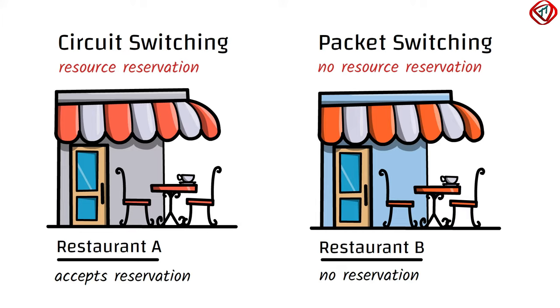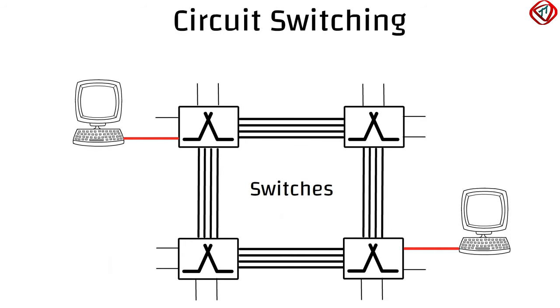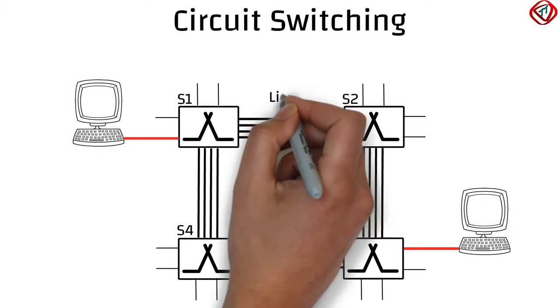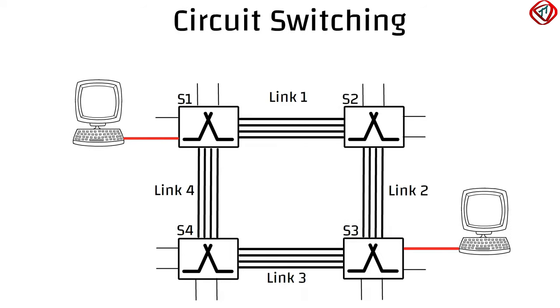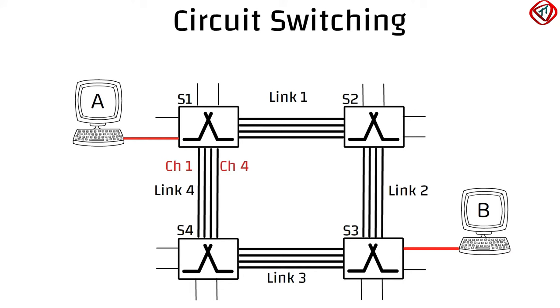Having packet switching already discussed in the earlier video, let us focus on circuit switching. Consider a network containing four switches interlinked by four links. Each link has four connections, or channels. Host A and host B are directly connected to the switches.